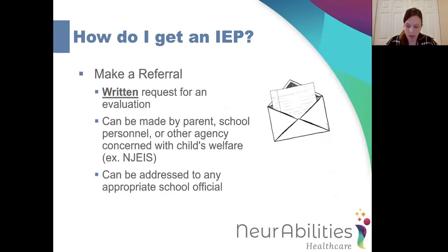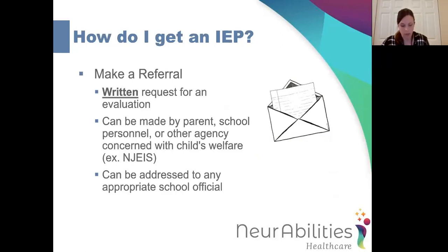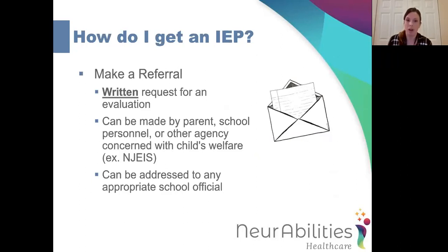The first step is making a referral to the school district of residence. This must be in written form — districts will likely accept an email, but it cannot just be a phone call; you have to have it in writing. In that letter, you're going to state that you're requesting an evaluation by the child study team for your child due to the concerns that you have. You can be specific or vague, but as long as you mention that you're requesting an evaluation by the child study team, that should be enough. This request can be made by people other than the parent — it can come from school personnel or another agency concerned with the child's welfare, such as the New Jersey Early Intervention System. If your child receives early intervention services, they will initiate the referral to your school district.